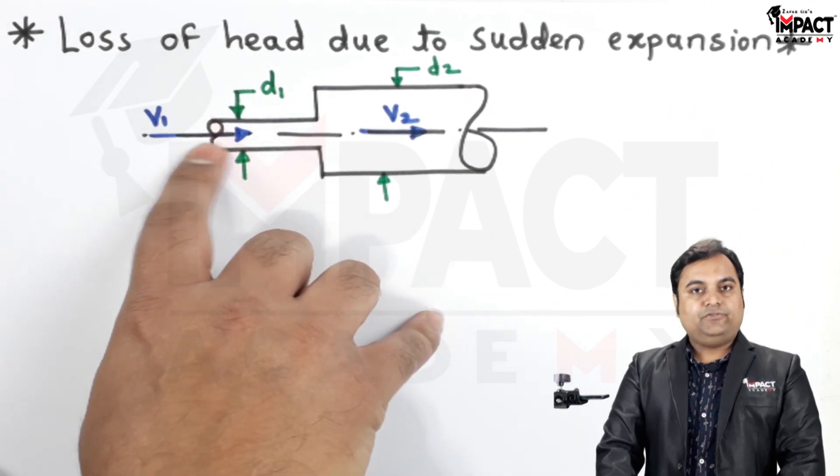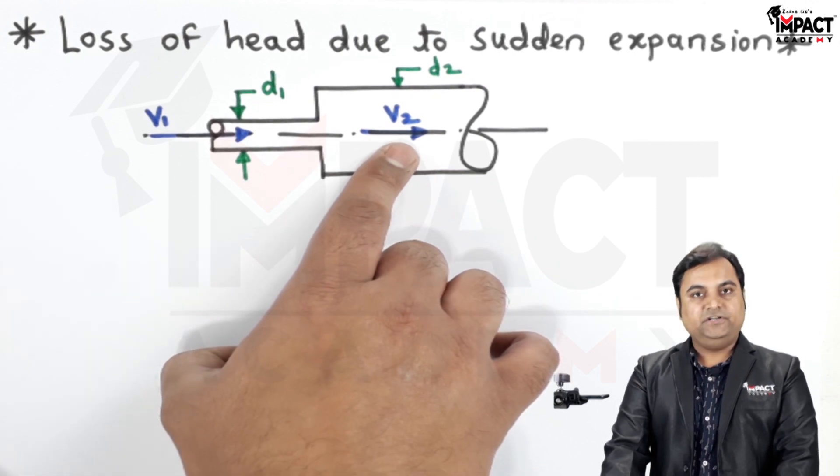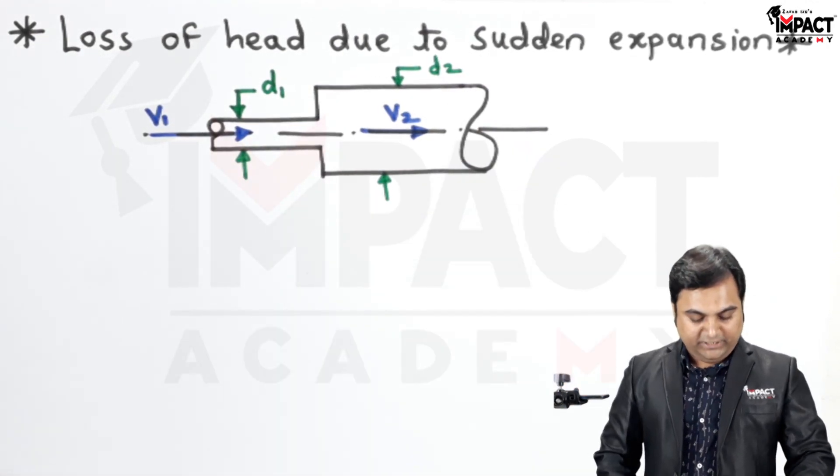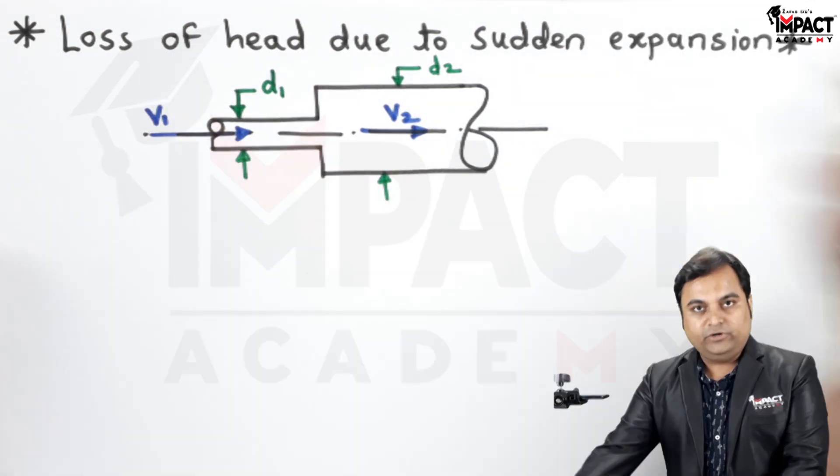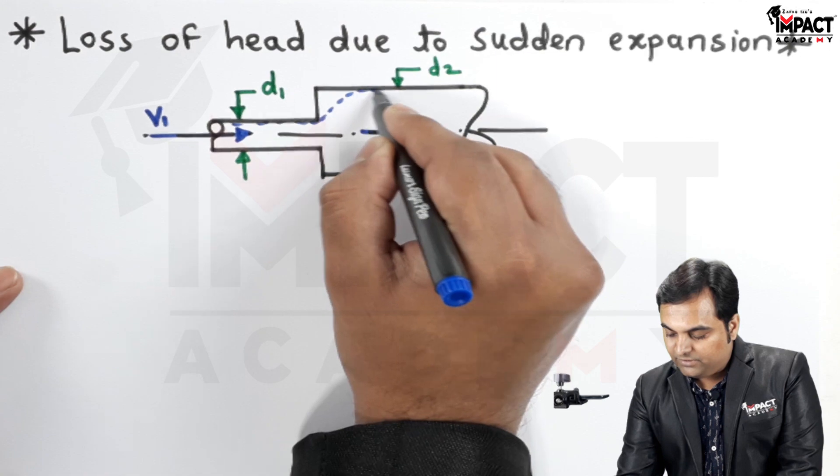In pipeline section 1, the velocity of the fluid is V1, and in section 2 it is V2. Now as we see there is sudden expansion, when the fluid is flowing it would be flowing in such a manner.